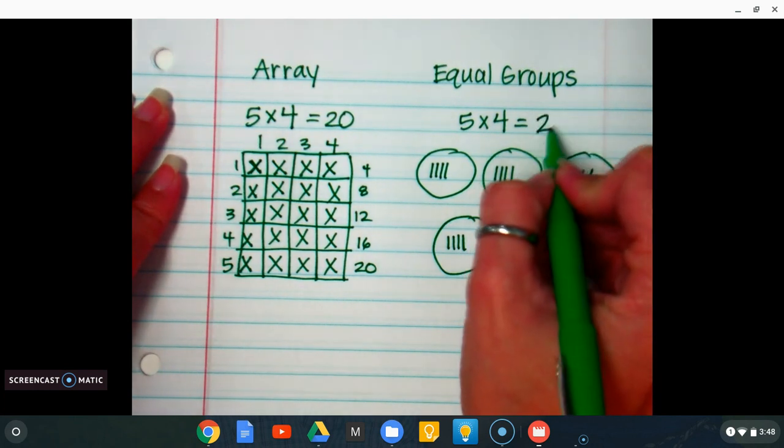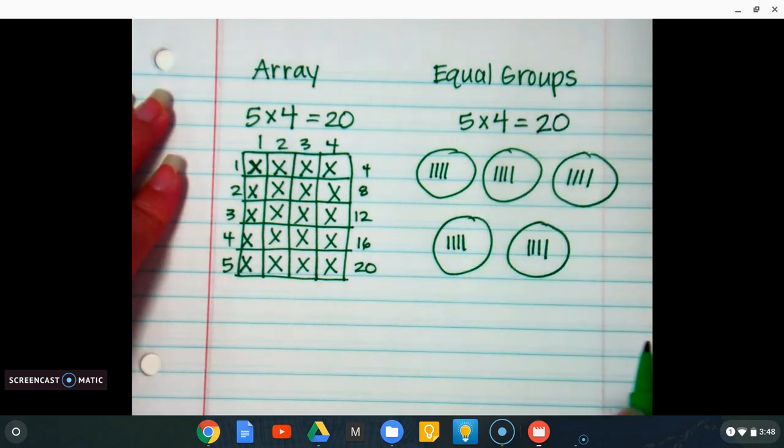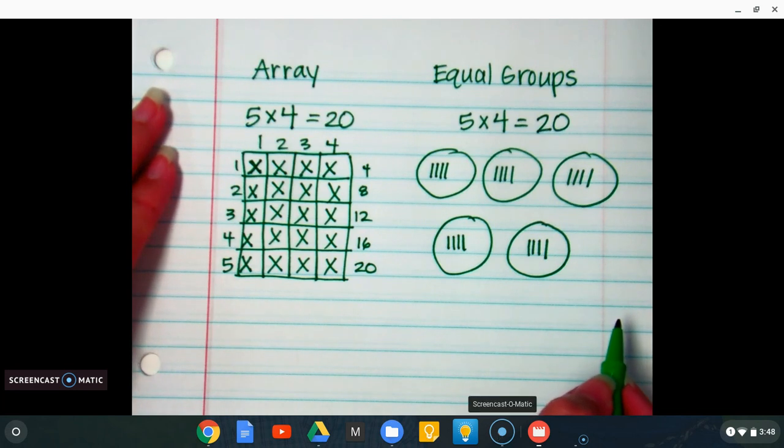So 5×4 is 20. This is just a review on how to use arrays and equal groups to solve a multiplication equation. I hope this helps. Thank you for watching.